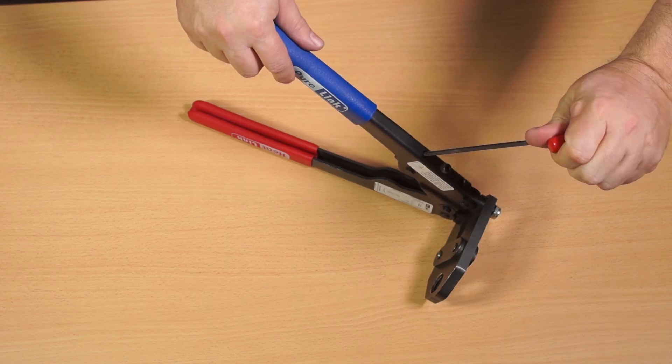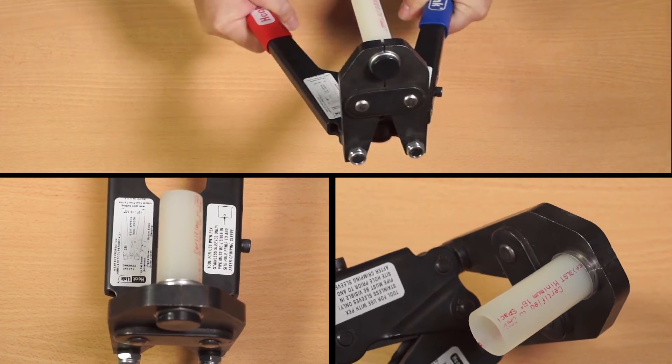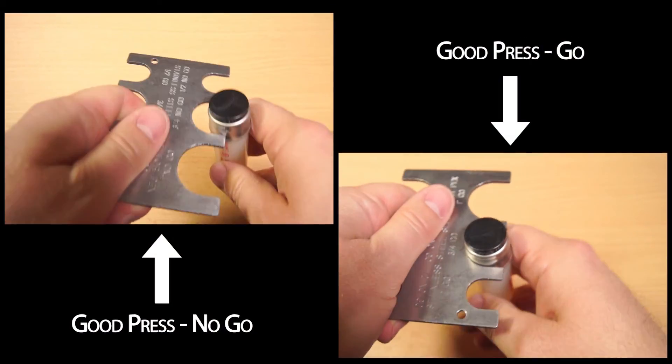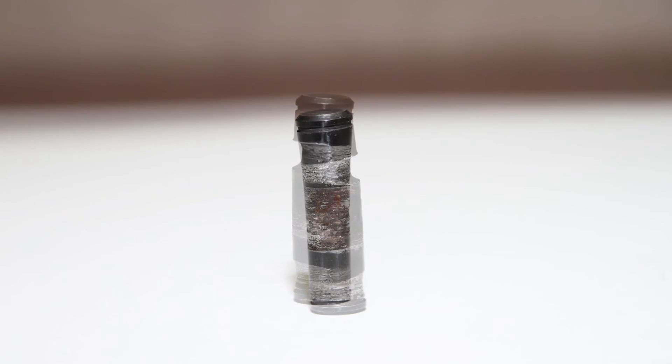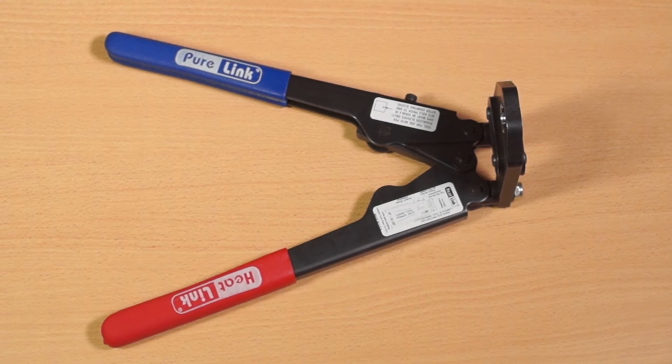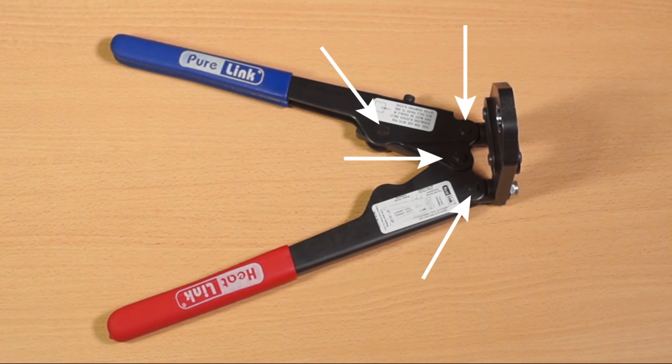Make three test presses and use the go no-go gauge to ensure they meet specifications. If they don't, it may indicate the pins are worn and need to be replaced.